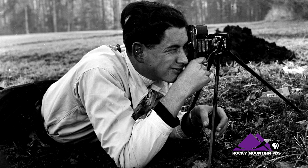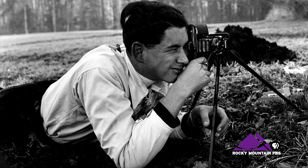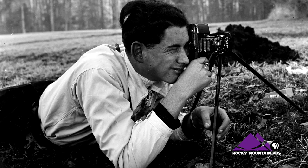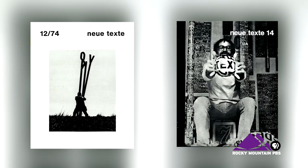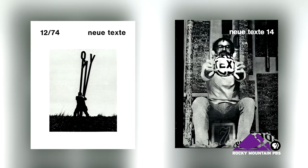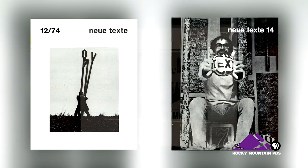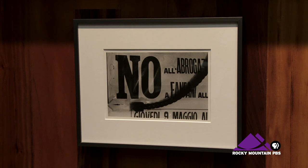Heimard Becker was an Austrian artist. He was born in 1925 and died in 2003. He first came to prominence in the 1960s and 1970s as the editor of an avant-garde journal called Neue Texte, or New Texts, and he focused on concrete poetry.